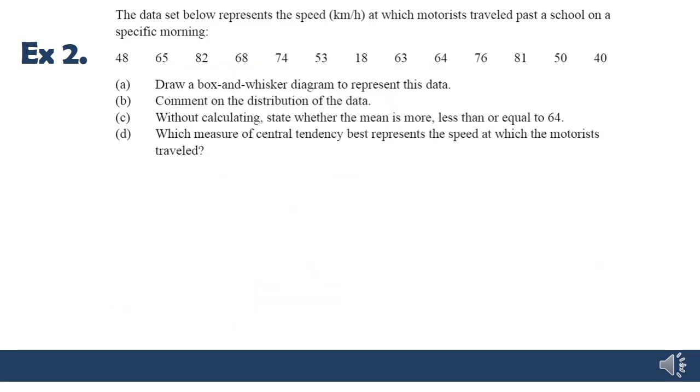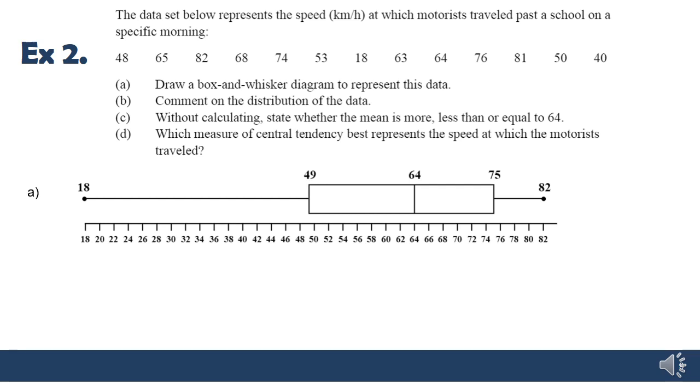Our last example today focuses on the speed at which motorists traveled past a school on a specific morning. This is not our school. This comes out of the textbook. But some of you might relate to it if you've ever feared for your life when you're entering the school gate. So draw a box and whisker diagram. We now should feel quite confident in doing that. So let's skip ahead. Our box and whisker diagram is going to end up looking like this. In this example, they've chosen intervals of 2, so the number line is going up by 2s. But because we're going all the way from 18 to 82, you might even choose to go up by 5s or 10s or whatever. That choice is up to you as long as you do it consistently with your ruler spaced out properly.